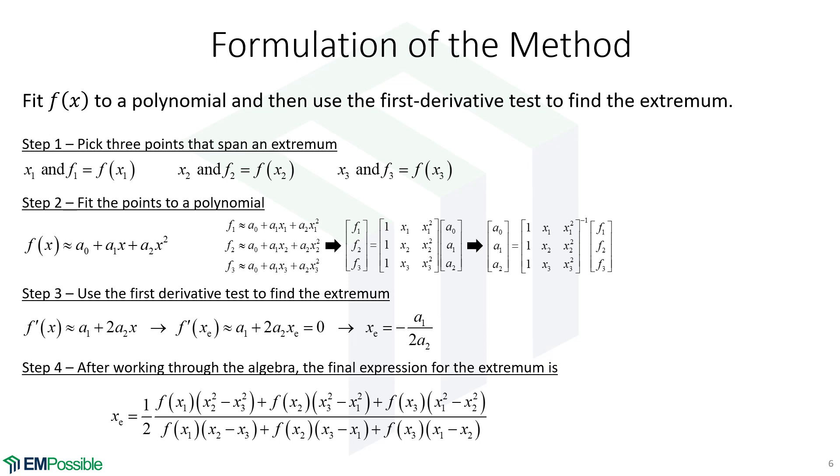And if we do this all algebraically, we can get this big, ugly equation here for just jumping immediately to that extrema. I tend to just stick with the matrix approach and never use this big, ugly equation. But there it is. You'll see that in the textbook and on the internet. That's the polynomial method.